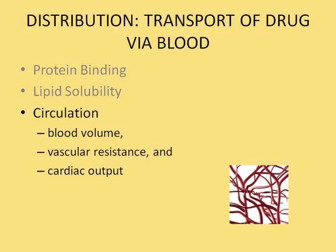The third factor affecting distribution is circulation. Medications depend on circulation to get to target tissues. Blood volume makes a difference — if you have low blood volume, you're not delivering much blood to the tissues. Vascular resistance is the same: a constricted vascular space means only small spurts of blood reach target tissues at a time. And with low cardiac output, the heart isn't effectively pumping blood around the body, so the drug doesn't circulate to reach target tissues.